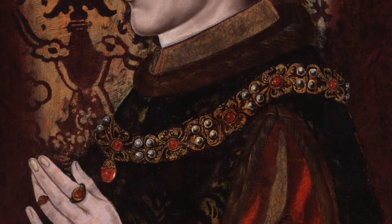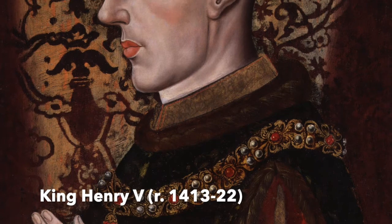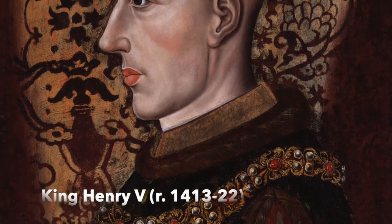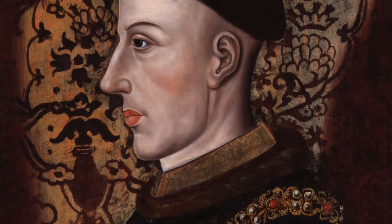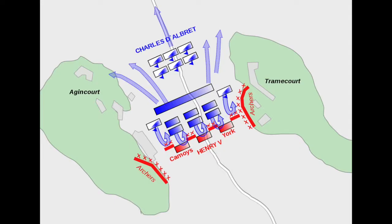Leading the English forces at Agincourt was King Henry V of England, who reigned from 1413 to 1422, and he quickly became one of the most celebrated monarchs in English history. During the 1415 campaign, many English troops had died from disease, so they attempted to withdraw back to Calais, which was English territory at the time, but their route back was blocked by French forces. The numerically inferior English — 7,000 to the French 25,000, nearly outnumbered one to three — had no option other than to take on the French forces in battle near the village of Agincourt in northern France.